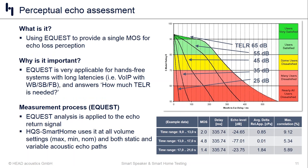The first is perceptual echo assessment — eQuest — a MOS metric that evaluates the perception of echo. The echo signal gets fed through a hearing model and we give you a single quality indicator for that echo signal. eQuest is very appropriate for hands-free devices, voice over IP devices, and extended bandwidths, because for those three use cases we typically have much longer delays. Delays are one of the key contributors to reduced echo canceller performance or poor conversational quality, making eQuest very applicable to smart speaker and smart home devices.